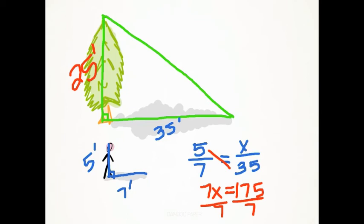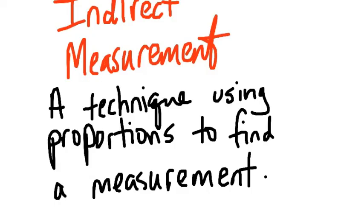So all thanks to indirect measurement, you don't have to climb the tree. For a definition, indirect measurement is a technique using proportions to find a measurement.